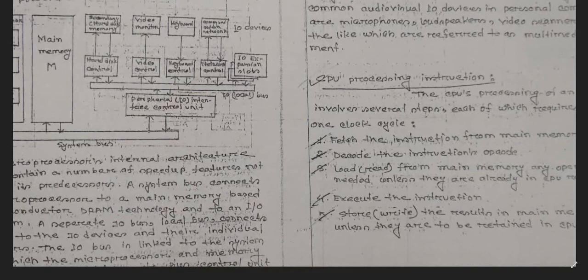In the cache memory section without pipelining, the sequence looks like this: first fetch, then decode, then load, then execute, and then store. By this we can see that after doing all of those steps, only then does task 2 begin.